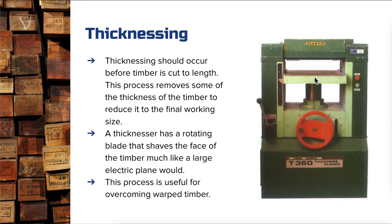In thicknessing, you may experience tear-out or checking — these indicate you may not be thicknessing correctly. At that point you need to go back to fundamental processes around how to read grain direction, making sure you're working with the arrows and cathedrals, the direction and slope of the grain to prevent that damage. There's a great video that runs through that process which I'll add to the show notes. That's the thicknessing process.